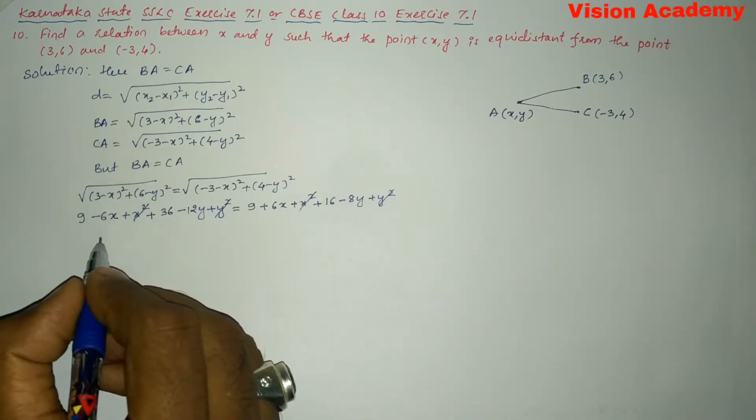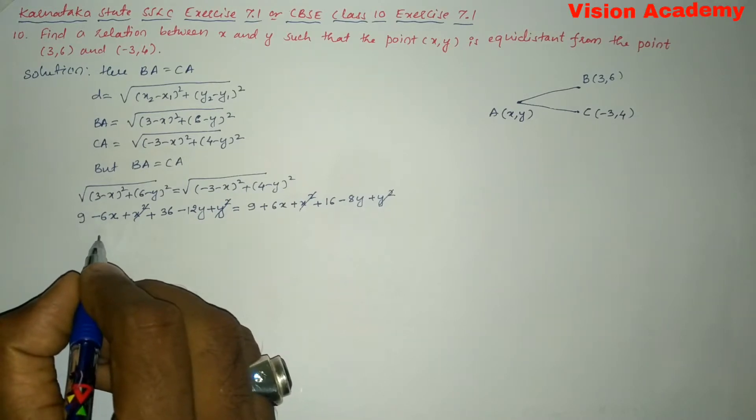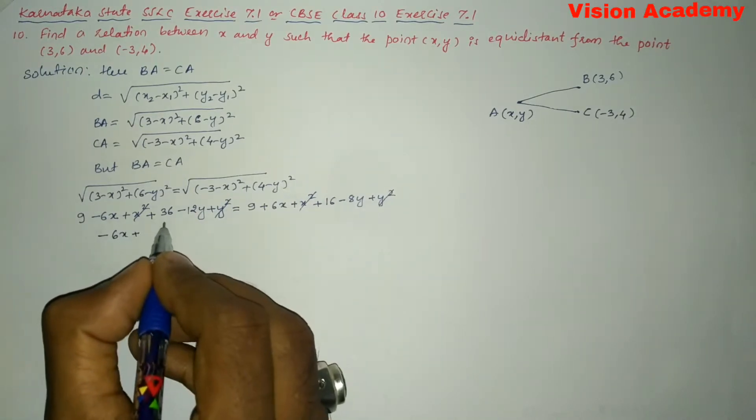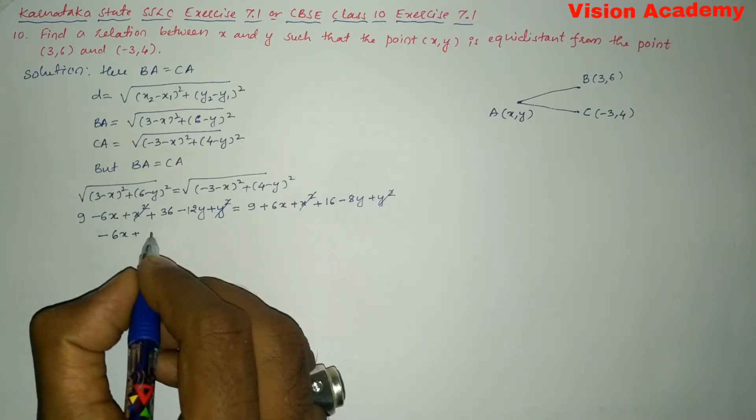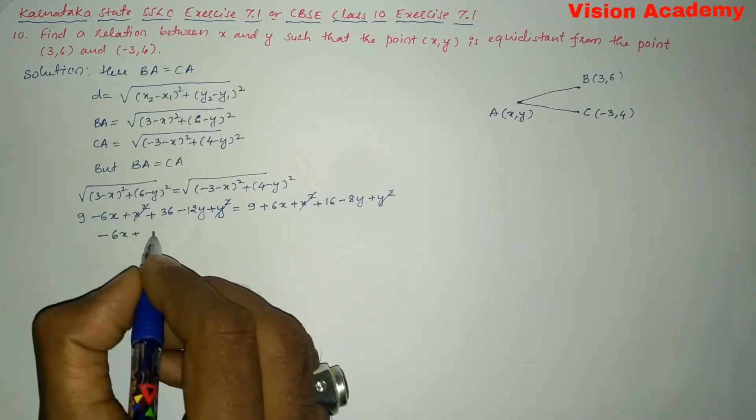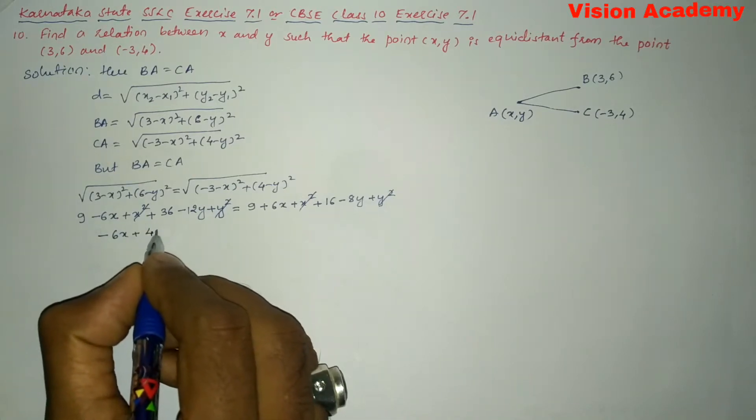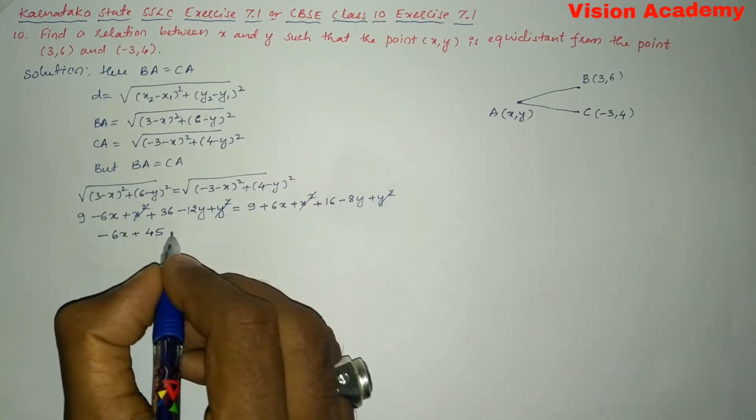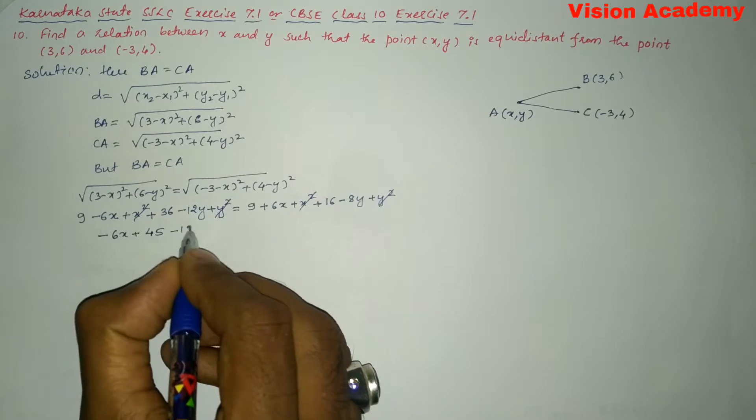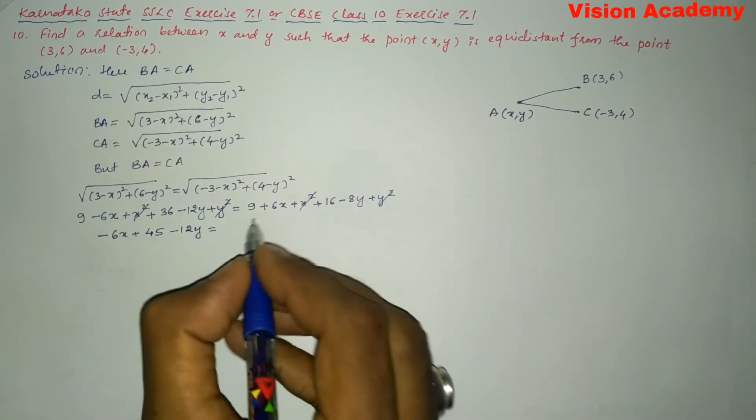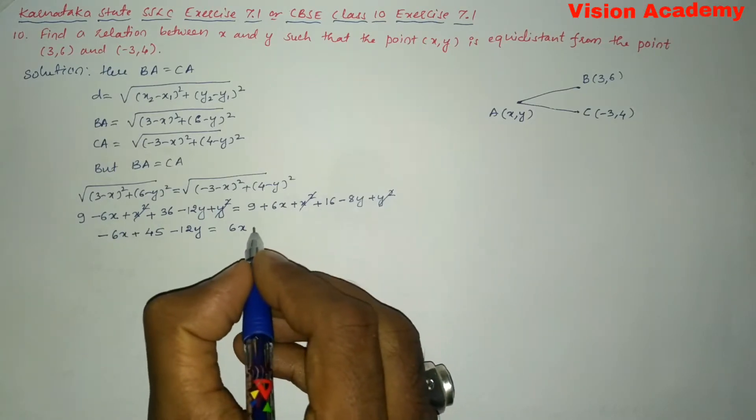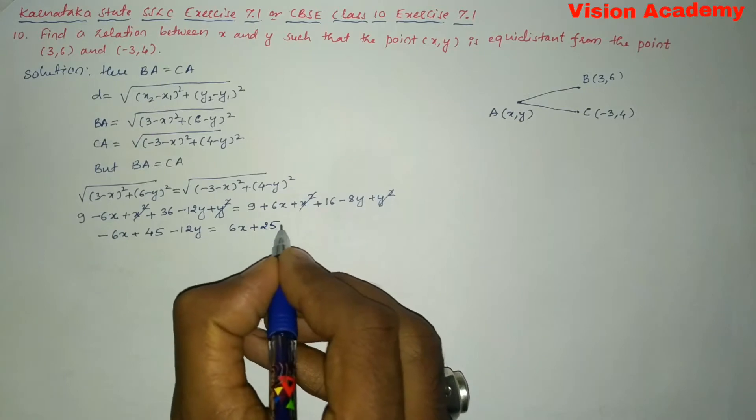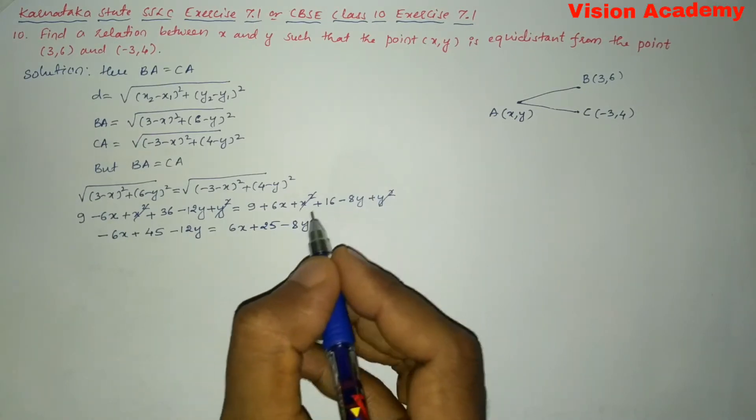Now, let us further simplify. We can write this expression as -6X + 36 + 9 gives us 45, minus 12Y is equal to 6X plus 25 minus 8Y.